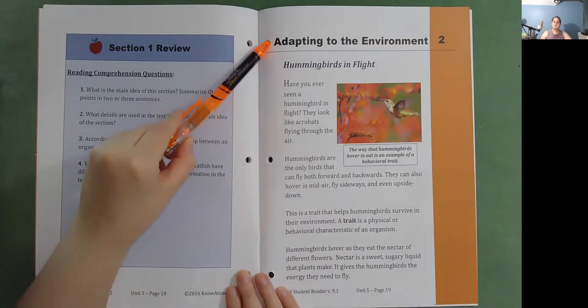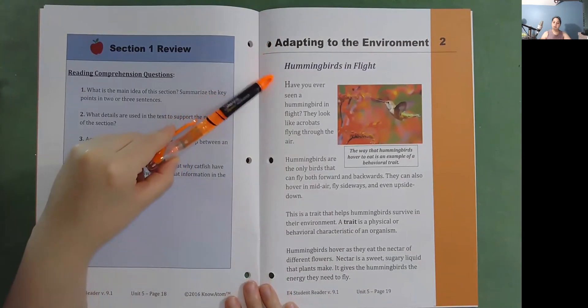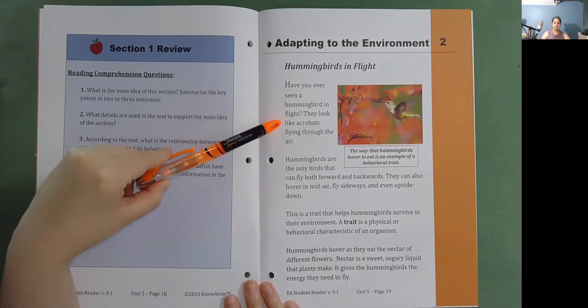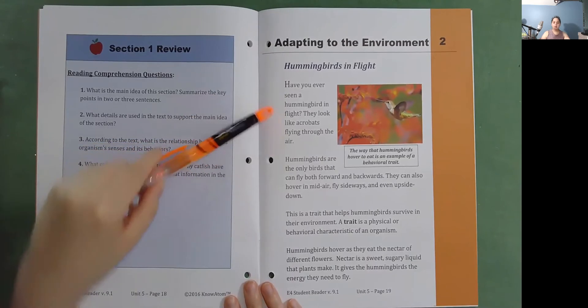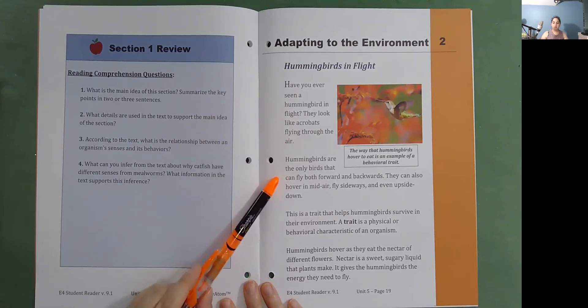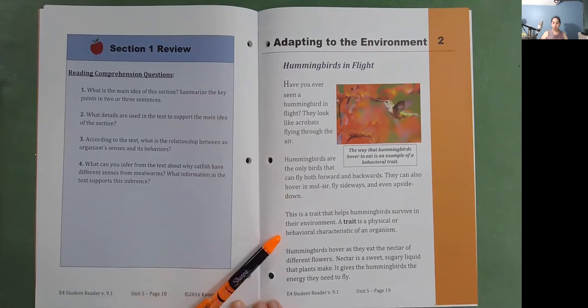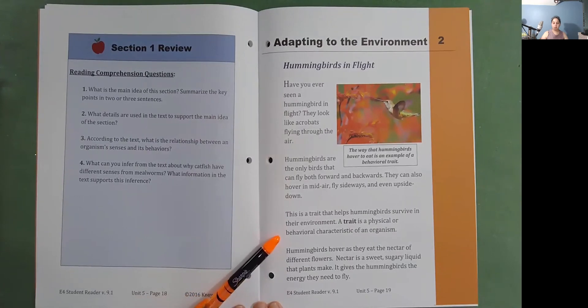Adapting to the environment. Hummingbirds in flight. Have you ever seen a hummingbird in flight? They look like acrobats flying through the air. Hummingbirds are the only birds that can fly both forward and backwards. They can also hover in mid-air, fly sideways, and even upside down. This is a trait that helps hummingbirds survive in their environment. A trait is a physical or behavioral characteristic of an organism.